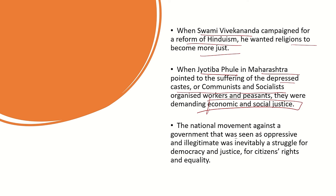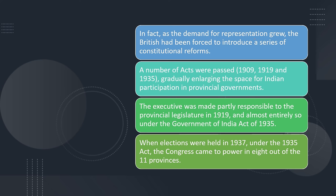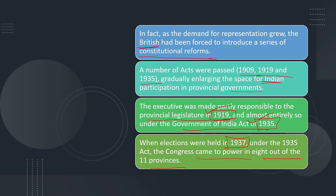In the national movement, people had fought against the British asking for justice and equal rights. The demand for political representation had also grown during the British period. In 1909, 1919, and 1935 there was a gradual increase in Indian people's participation in the government. Executives became partly responsible to provincial legislatures in 1919, and almost entirely so under the Government of India Act of 1935. In 1935, Congress won 8 out of 11 provinces.